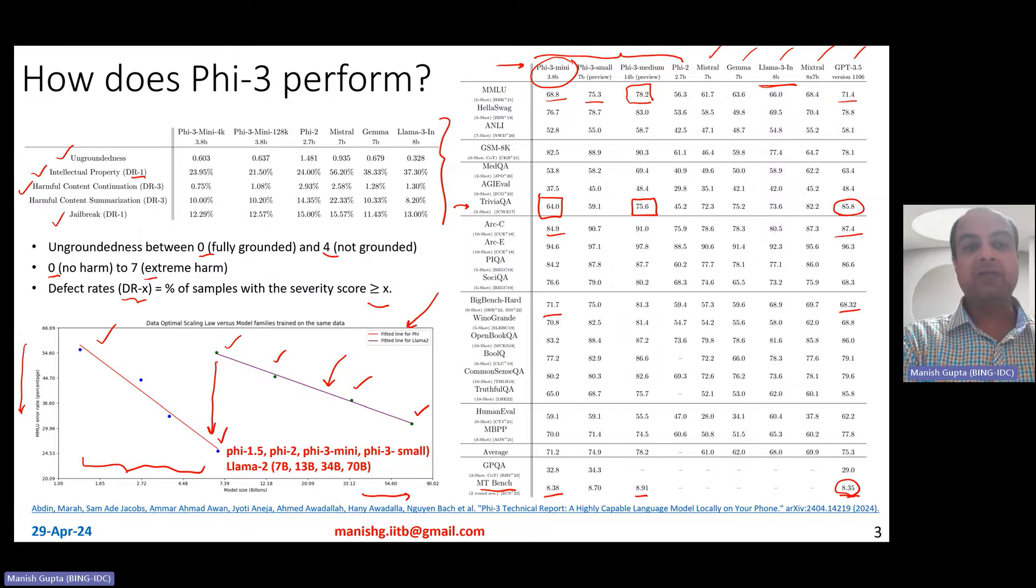As you observe here, the Phi-3 mini series, from an ungroundedness perspective, performs bad compared to Llama 3 Instruct. But on other things like intellectual property stuff, it's better. On harmful content generation, it's better. On harmful content summarization, it's almost equivalent. And jailbreak, it's basically better. All of these models have different levels of safety and Phi-3 small is not that bad. Several times it leads to ungrounded responses, but otherwise compared to Llama 3 Instruct, if you compare with Mixtral or Gemma, it is equivalent in terms of how much ungroundedness or hallucination it has.